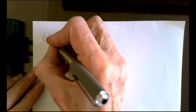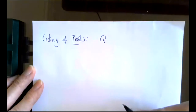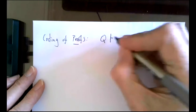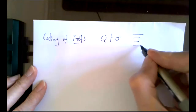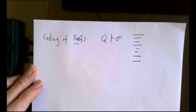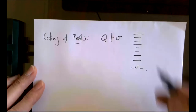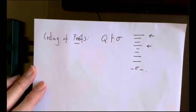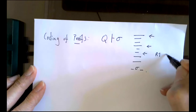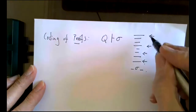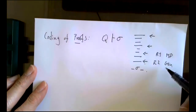Coding of proofs: I could take my set of seven axioms and write a proof from that. A formal proof is just a finite string of formulae which ends in sigma. Everything that occurs is either an axiom from Q, derived from two earlier things by modus ponens (rule one), or derived from an earlier thing by generalization (rule two). Just two simple rules and seven axioms to work from.